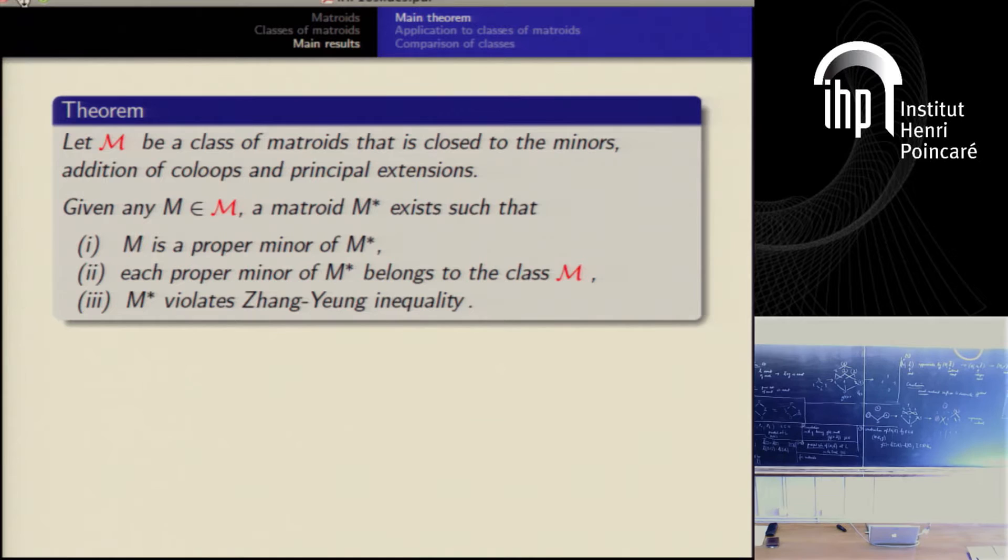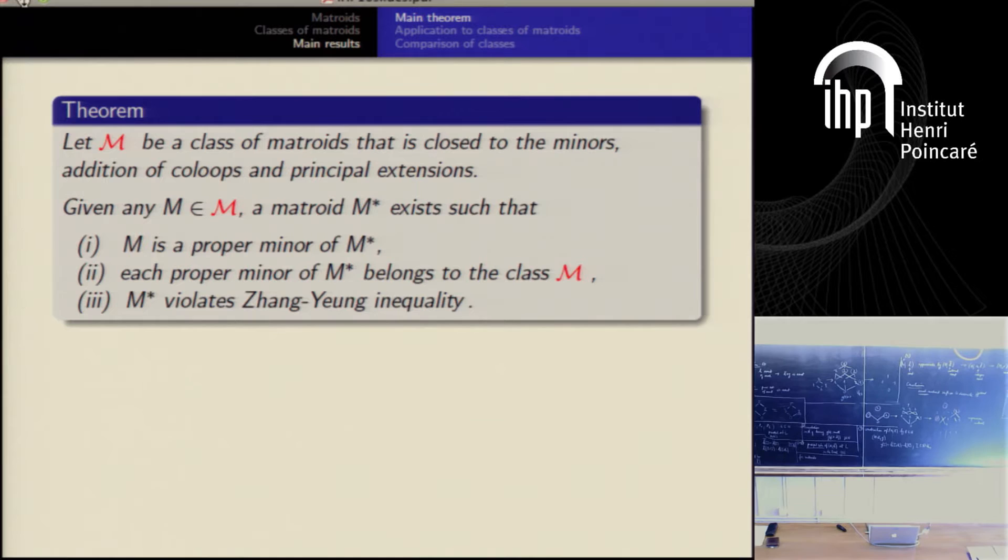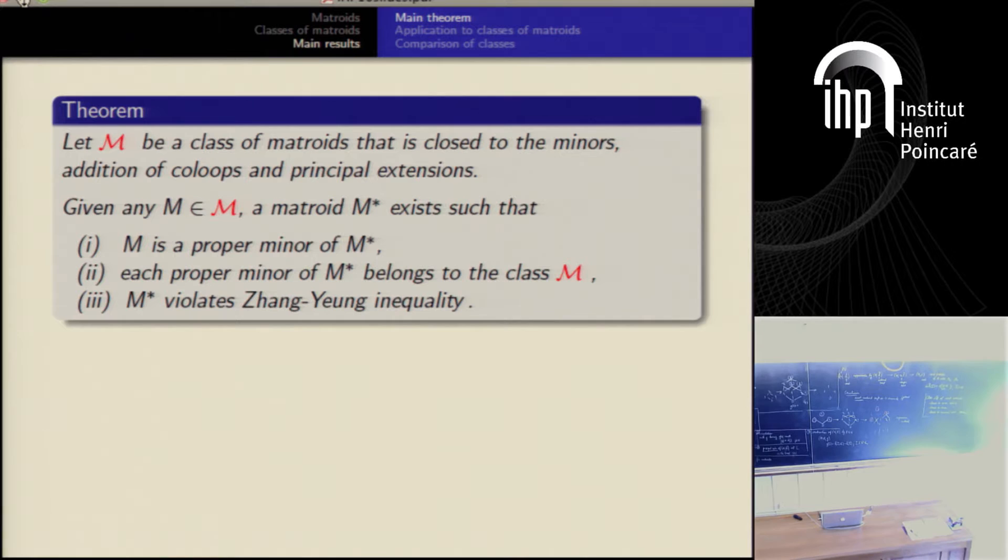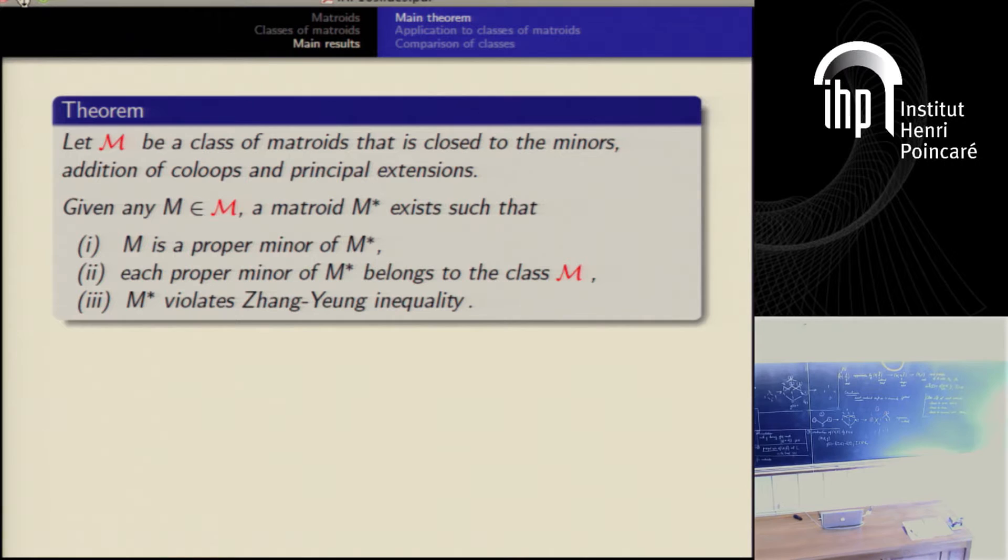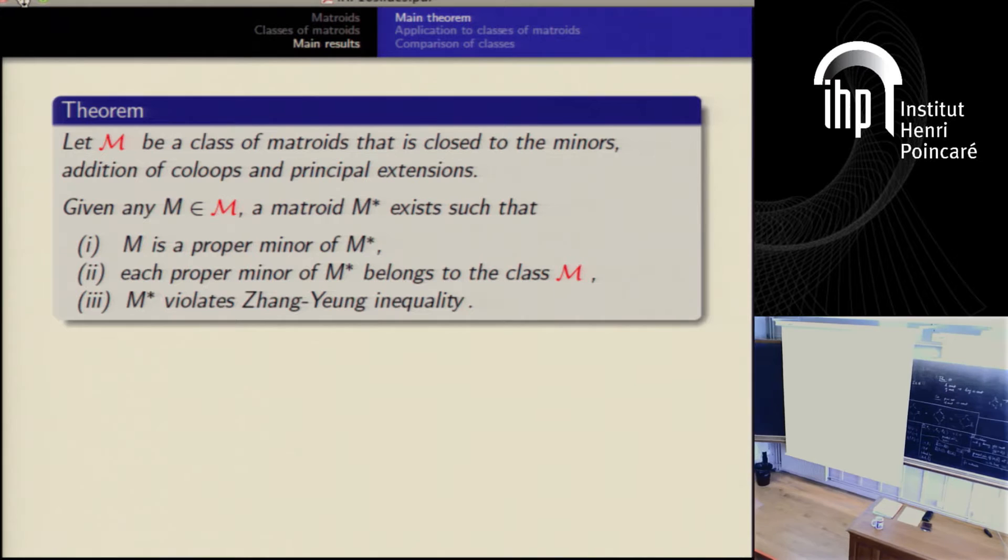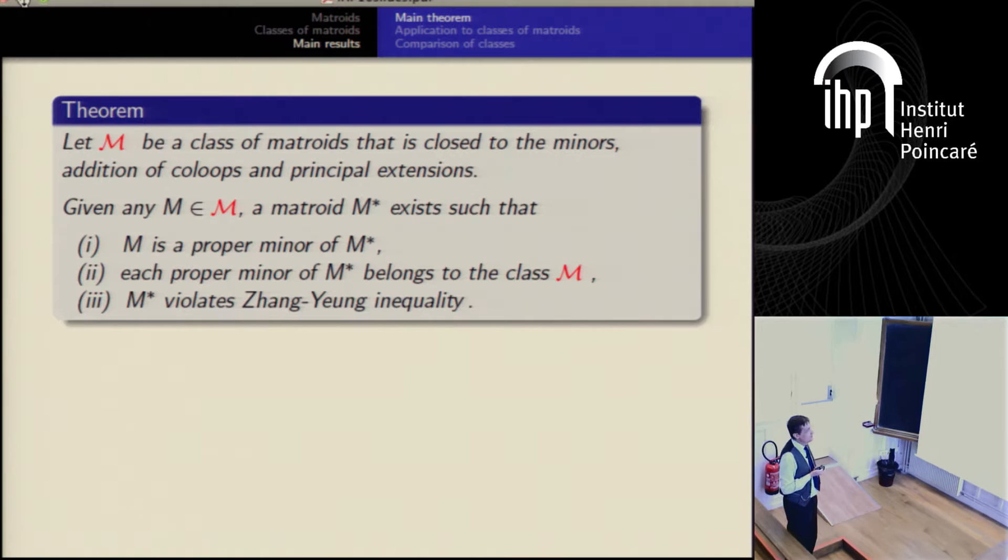And here is the main theorem. So I have a class of matroids, like imagine almost entropic. And it's close to minors. Addition of columns is the same, like the sums of independent variables. And it's close to principal extensions. So the assumptions are OK with the almost entropy matroids. And then the trick is that if I take any matroid in the class, then it can be enlarged approximately four times. It's four times bigger, this M-star.